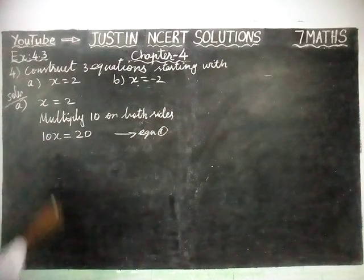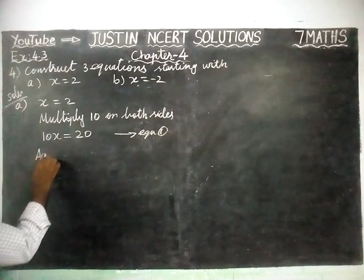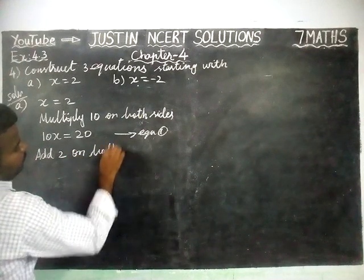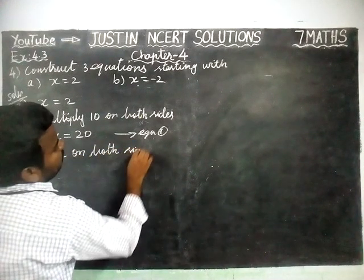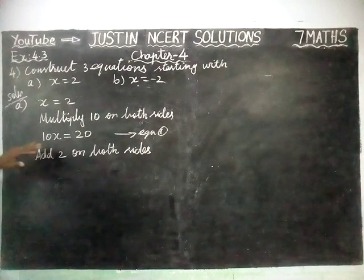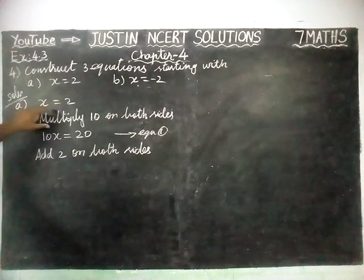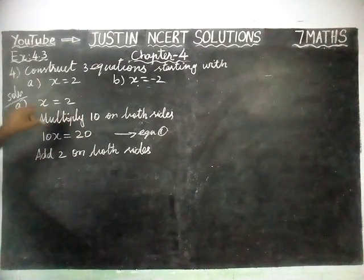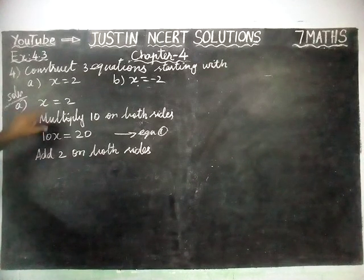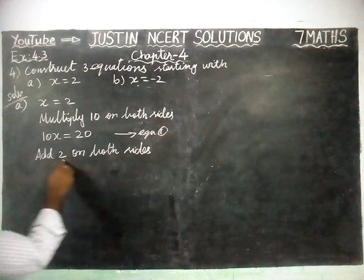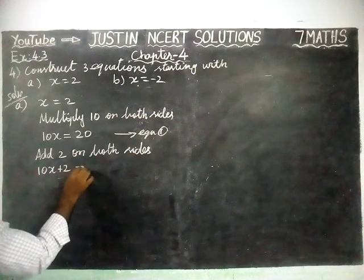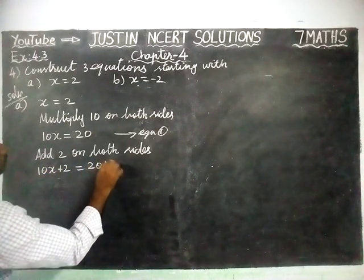Now, we are going to add 2 on both sides. We can write any values — this is not only multiplying 10 on both sides. You can take any numbers. Instead of multiplying, you can subtract, add, or divide anything. But this is one procedure. So, we are going to add 2 on both sides: 10x plus 2 is equal to 20 plus 2.